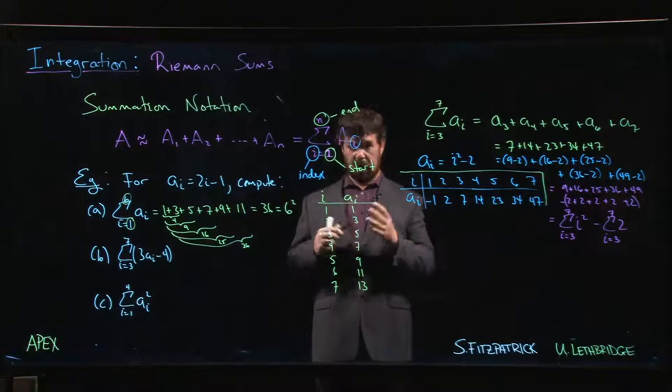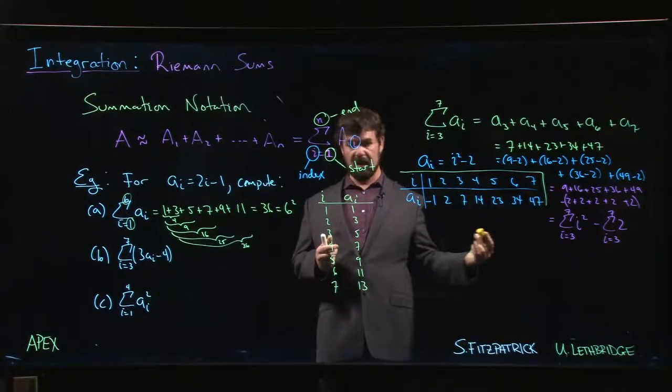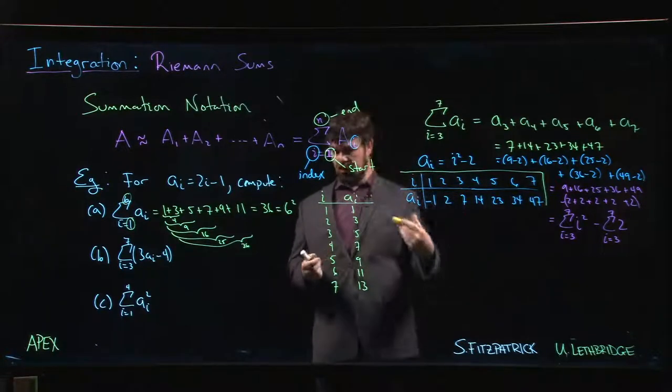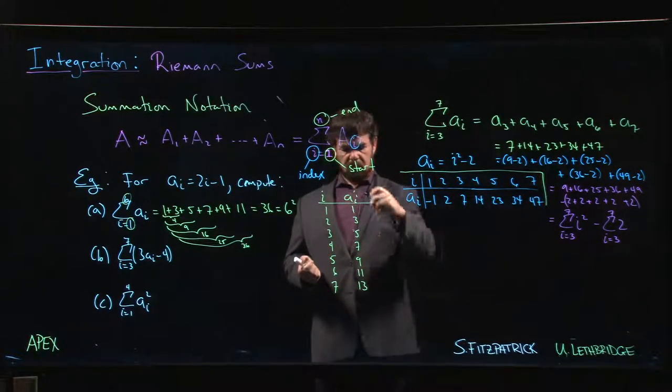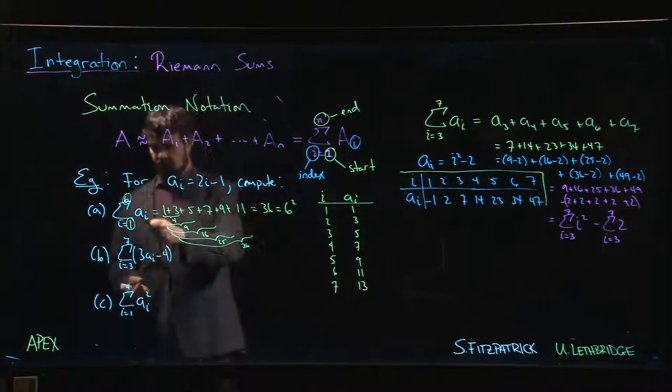So if you have a sum like this, starting at one, ending at six, maybe you come up with some technique to convince yourself that this pattern is always going to hold. For every value of n, if I do the sum going from one to n, that answer is always going to be n squared. Then I don't bother generating the numbers, I don't bother adding them up, I just take this number and I square it.